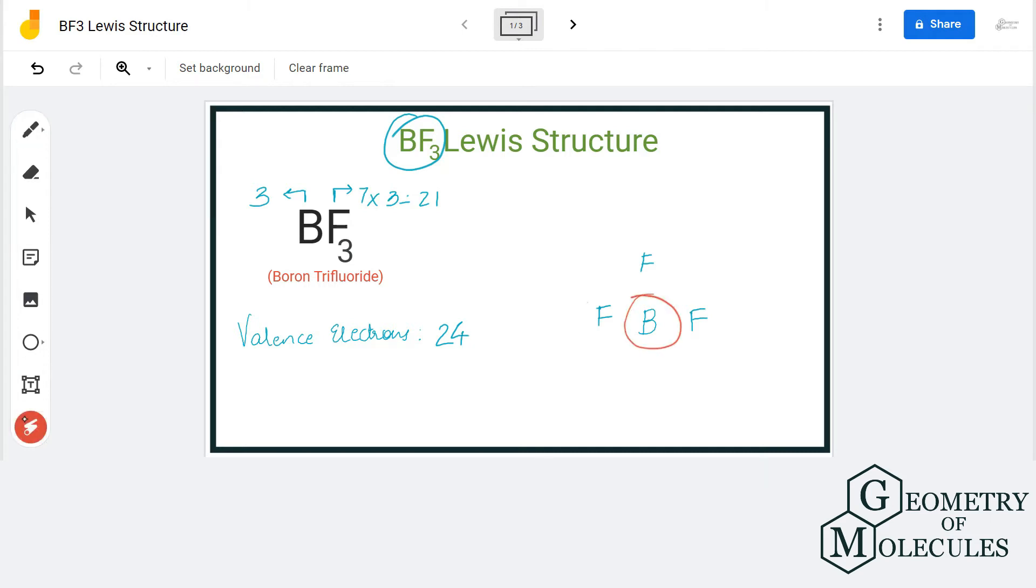We'll place all the fluorine atoms around boron. We'll place two valence electrons between each fluorine and boron atom to show a chemical bond. So we are placing two here, two here, and two here. We have used six valence electrons out of 24, and we are left with 18 more electrons.